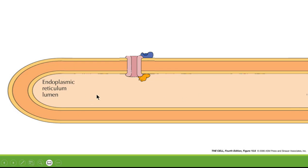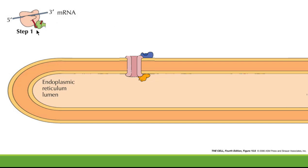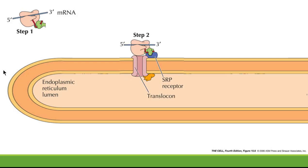This is the endoplasmic reticulum membrane and this is the endoplasmic reticulum lumen. This is the translation machinery that is going to transport this protein inside the ER. The protein will have a sequence called the signal sequence, which will be recognized by a protein called SRP, or signal recognition particle. This is step one. The SRP will then be recognized by a receptor present on the membrane of the ER called the SRP receptor — this is step two.